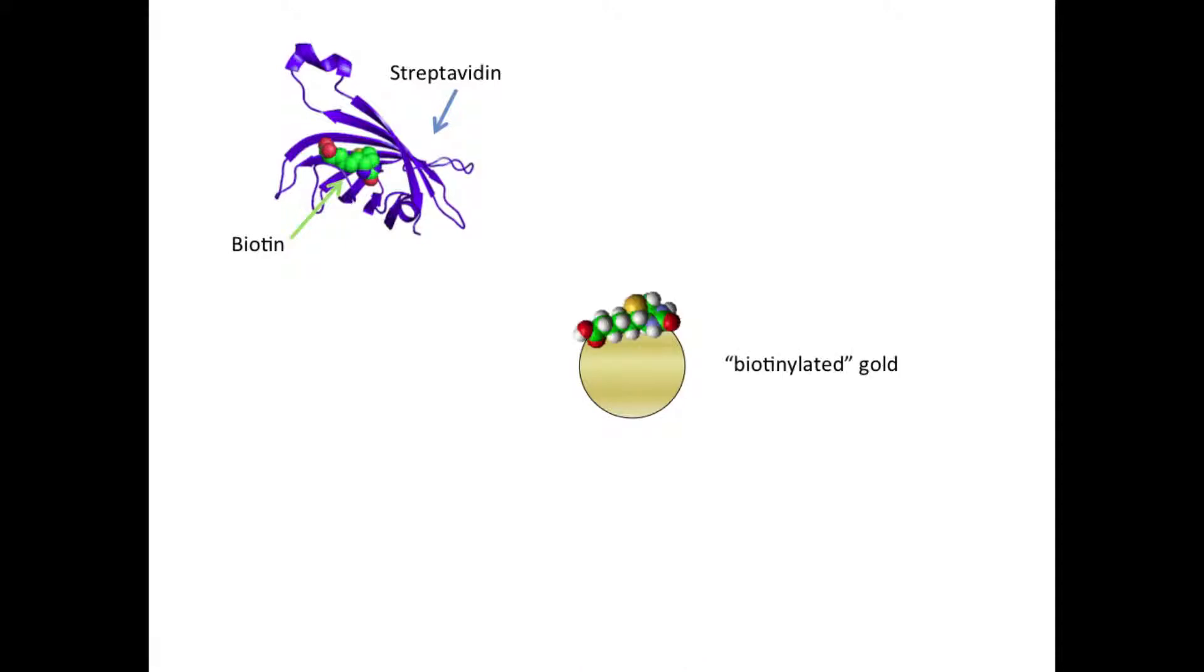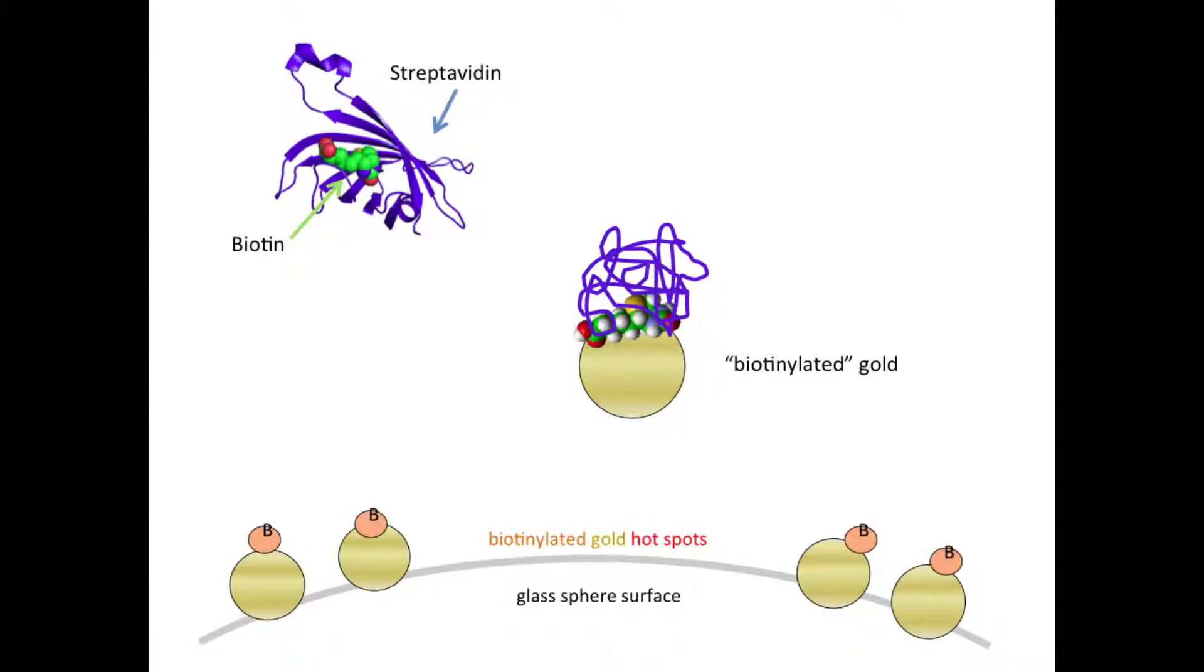We use gold particles attached to biotin, called biotinylated gold, so that the streptavidin binds to the gold hotspots. A model of the idea looks like this. A glass sphere with biotinylated gold spots on it that streptavidin protein can bind to.